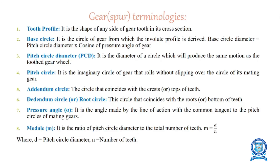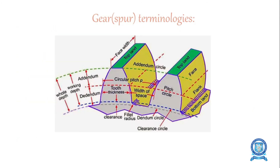The first term is tooth profile: it is the shape of any side of a gear tooth in its cross section. Next is base circle: it is the circle of a gear from which the involute profile is derived. Base circle diameter equals pitch circle diameter multiplied by the cosine of the pressure angle of the gear.